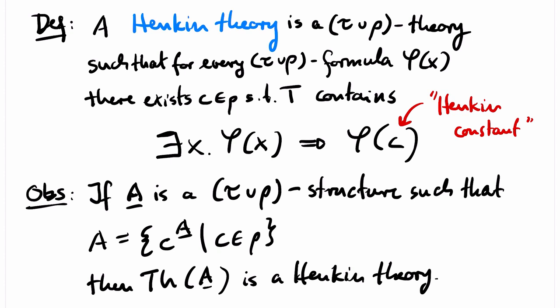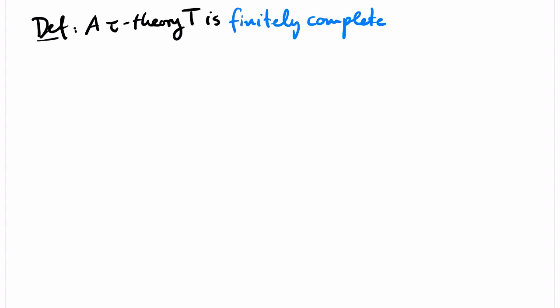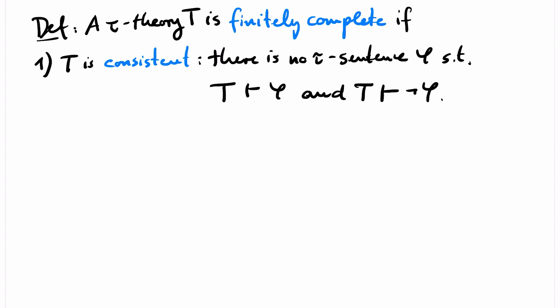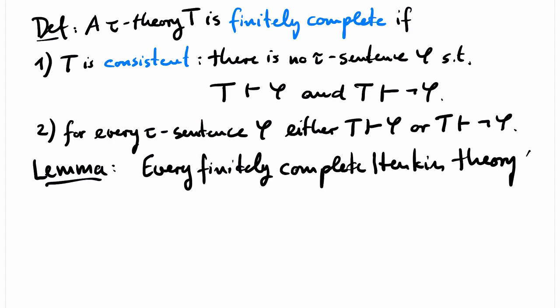Our first lemma will state that under a certain extra condition there is a converse to this observation: for every Henkin theory T that meets this condition, there is a structure A such that T is the theory of A. A τ-theory T is called finitely complete if, first, T is consistent — that is, there is no τ-sentence φ such that there is a formal proof of φ in T and a formal proof of ¬φ in T. And second, for every τ-sentence φ, either there is a formal proof of φ in T or there is a formal proof of ¬φ in T. Our lemma says that every finitely complete Henkin theory has a model.